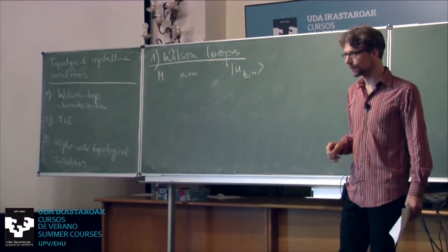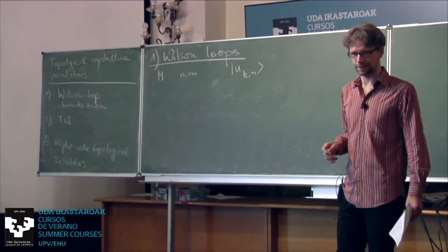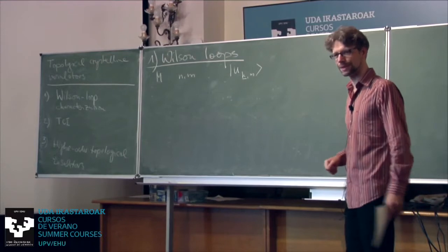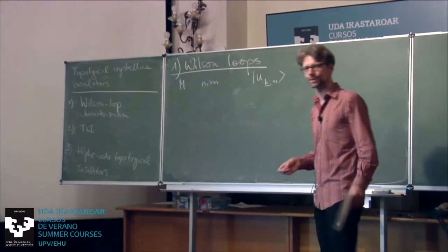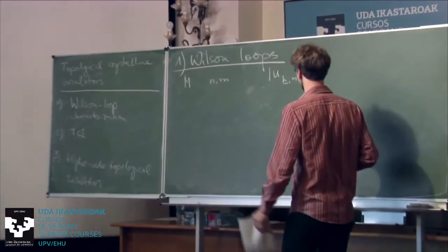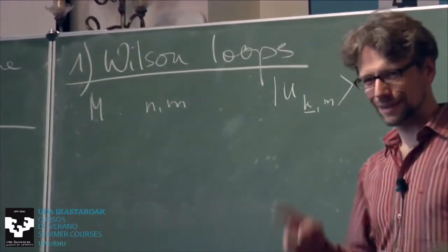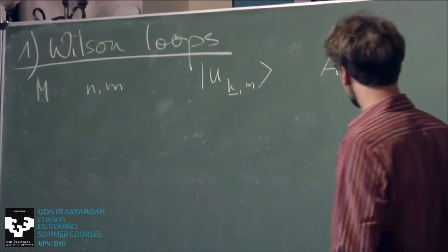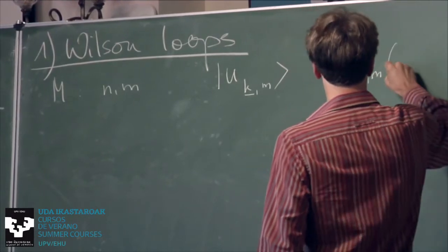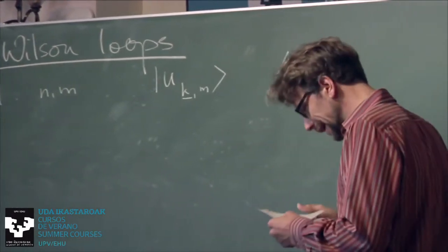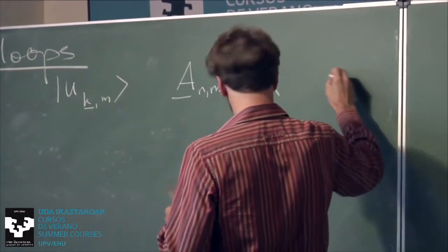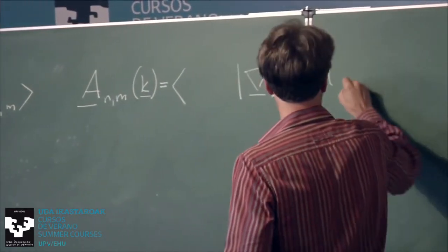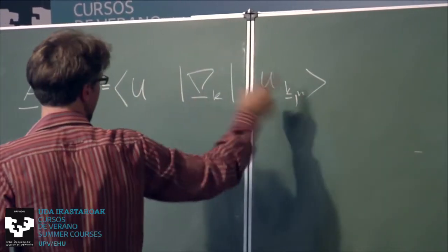There will be lecture notes in LaTeX, but it will take a little bit — in a few weeks or months you'll have them uploaded somewhere. The non-Abelian Berry curvature is a vector that we call A. It has indices M and N and a momentum dependence K. It's just the K-derivative acting on the N-th band eigenstate.